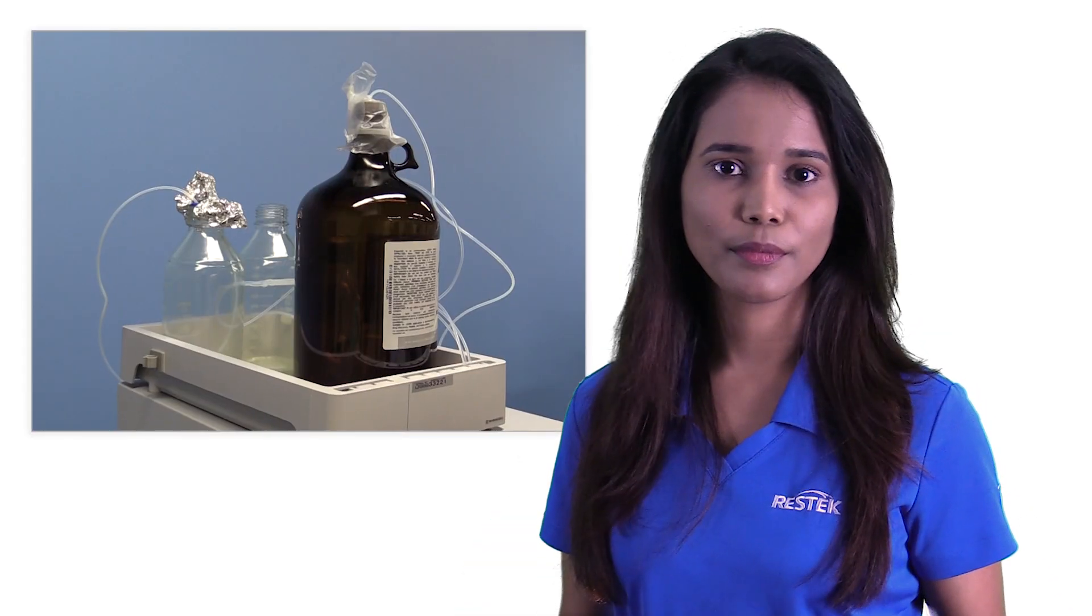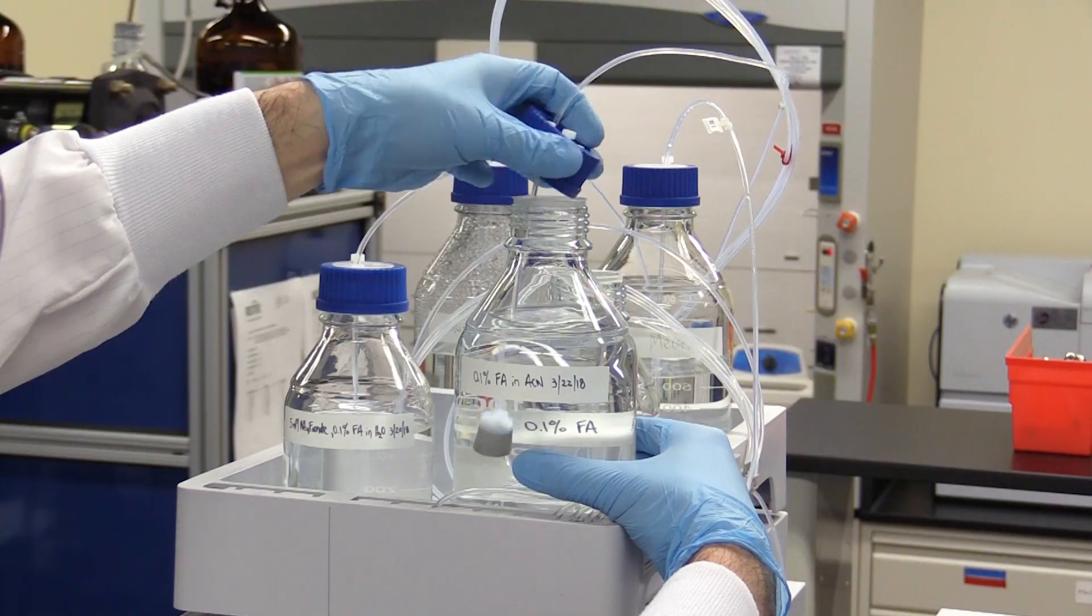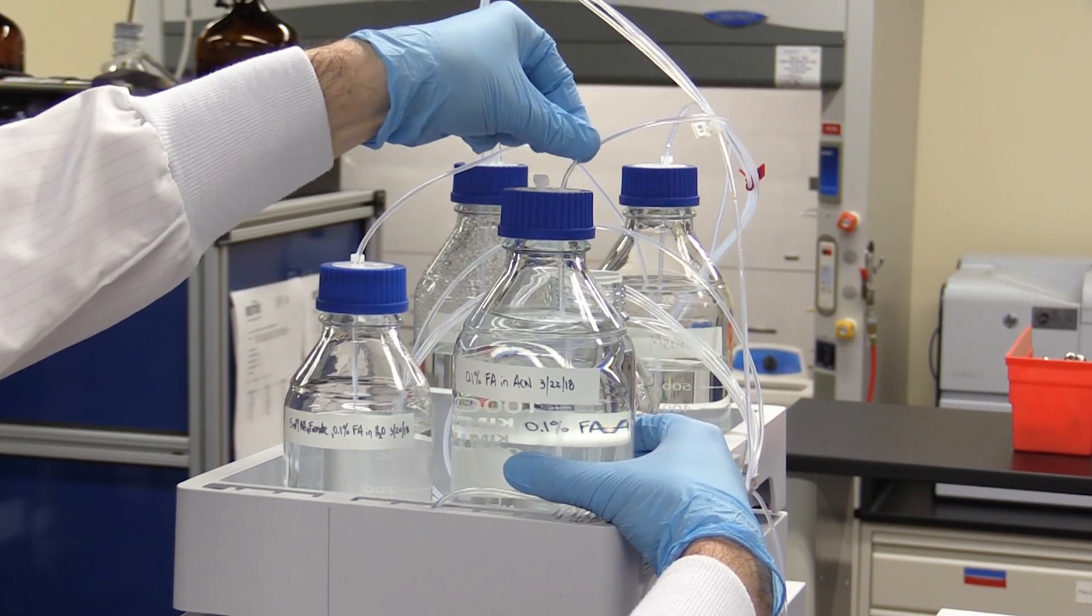Column clogging from mobile phase can occur due to bacterial growth in poorly maintained aqueous mobile phase bottles and precipitation of buffer salts. In all cases, mobile phases should be freshly prepared with HPLC-grade solvents and capped.